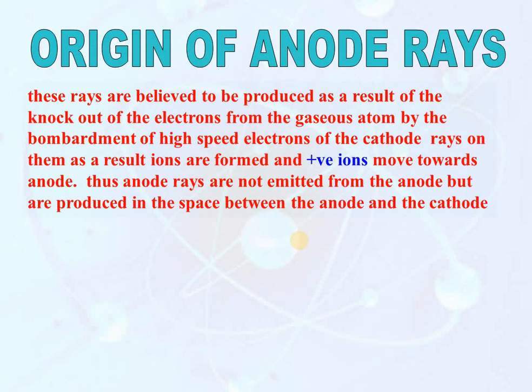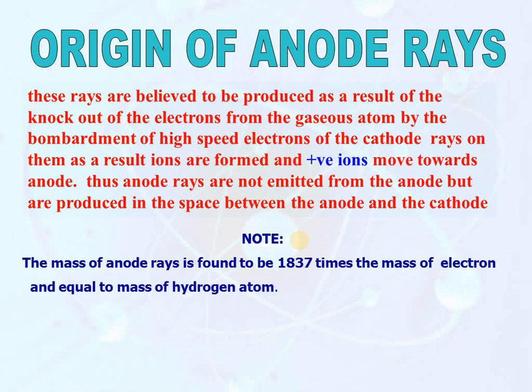From all these observations, it is concluded that anode rays consist of positively charged particles and these particles are named as protons. The origin of anode rays: these rays are believed to be produced as a result of the knock-out of electrons from the gaseous atoms by the bombardment of high-speed electrons from the cathode. As a result, ions are formed and the positive ions move towards the anode. These anode rays are not emitted from the anode but are produced in the space between the cathode and anode by the ionization of gas molecules by the cathode rays. The mass of anode rays is found to be 1837 times the mass of electron and equal to the mass of a hydrogen atom.